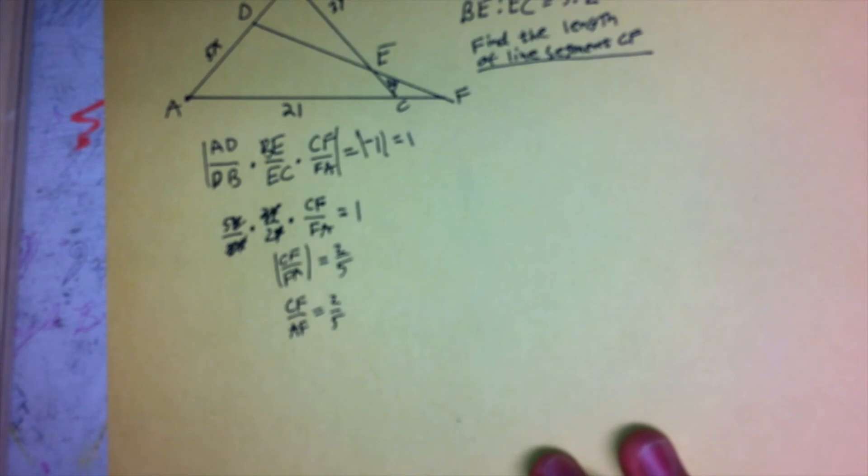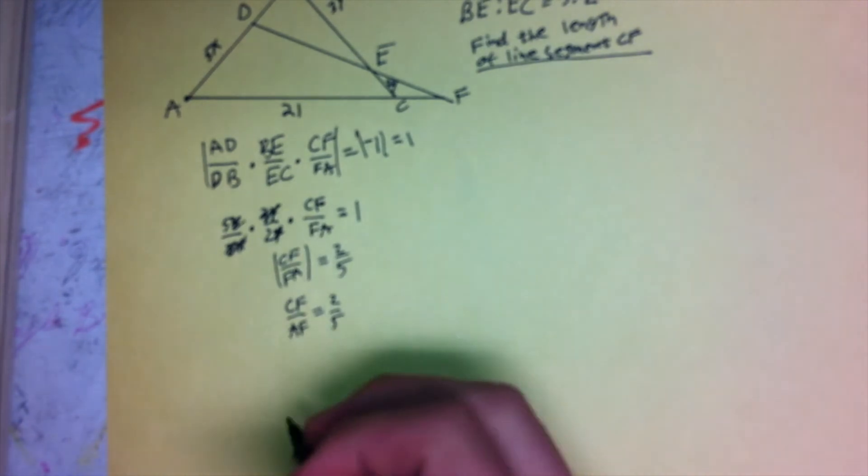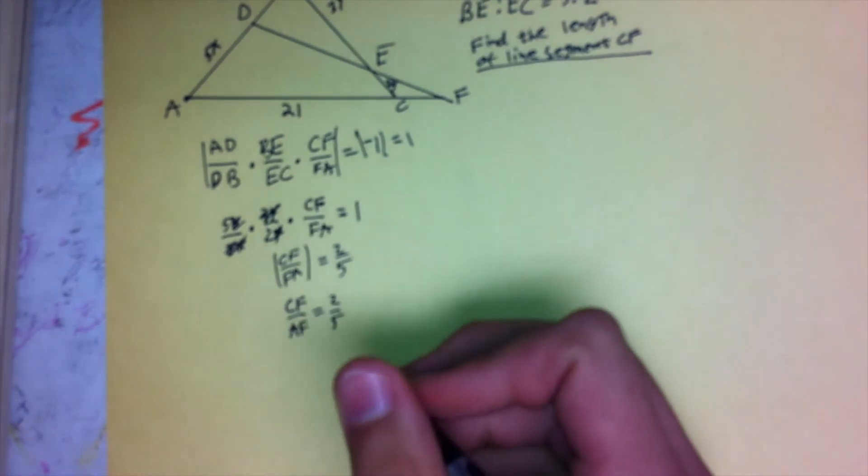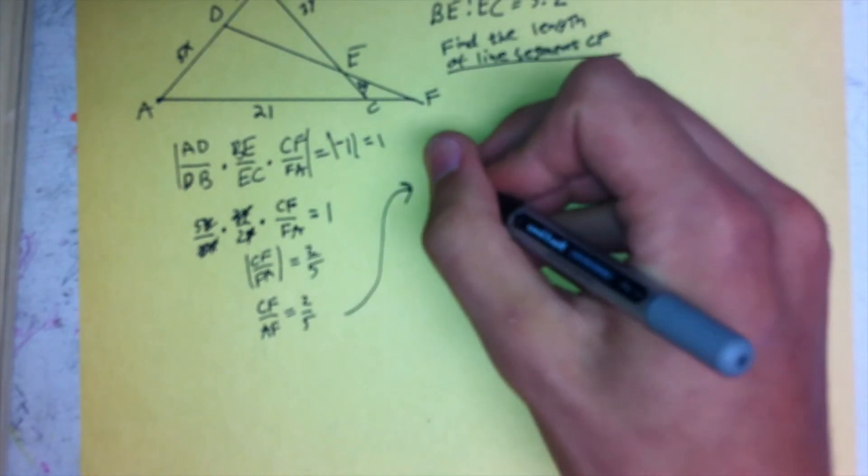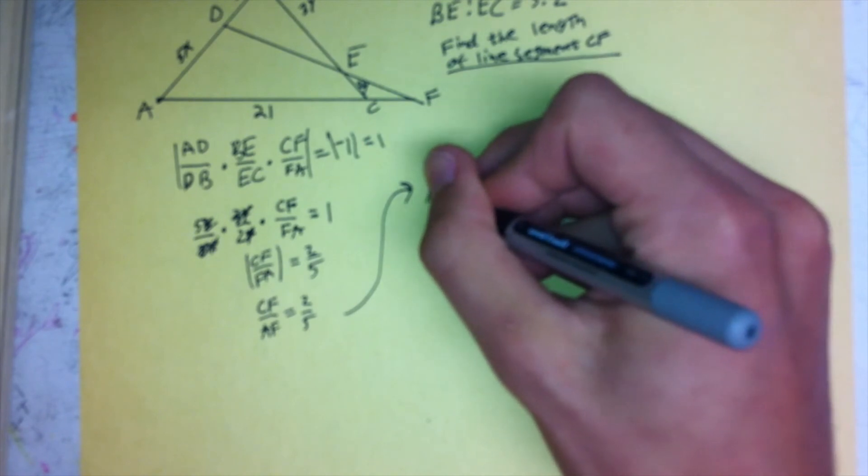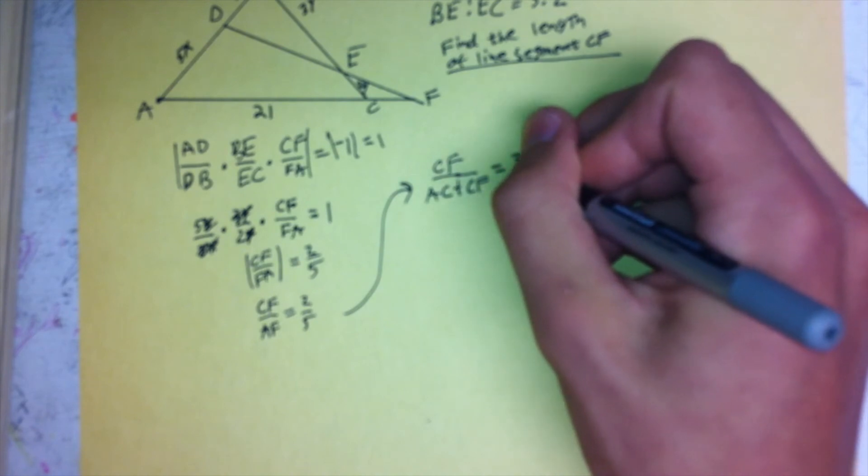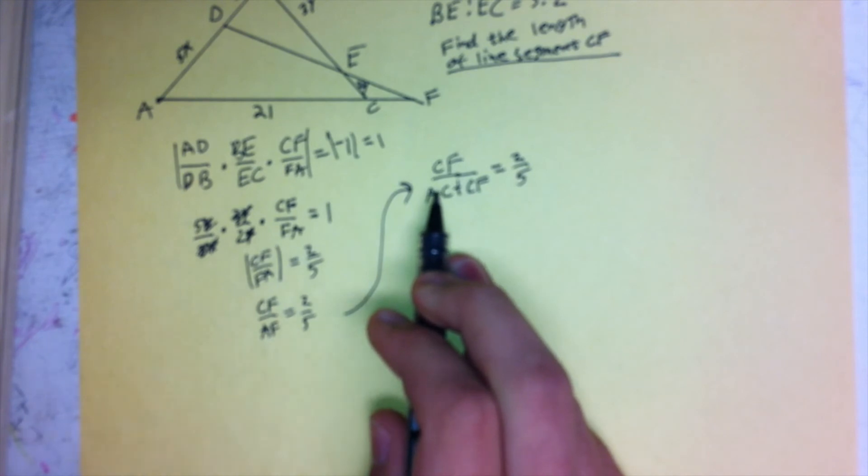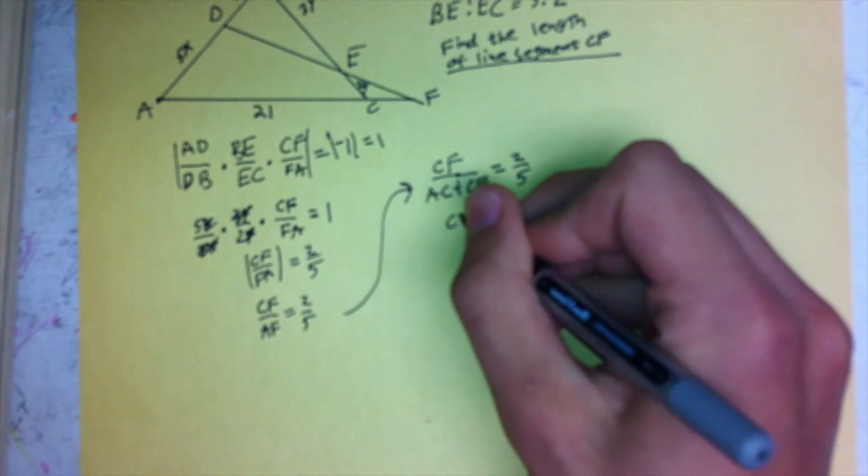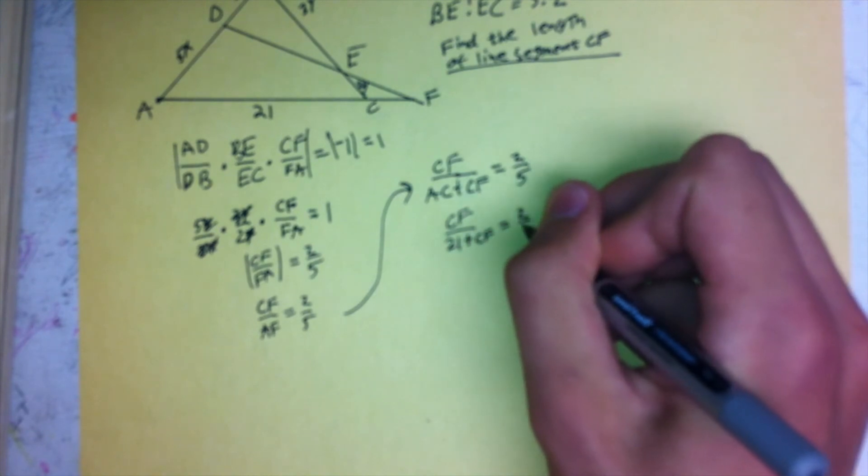And then, we know that CA is equal to 21. So, what we're going to have to do is, we're going to break AF up into CA plus CF. So, that gives us CF over AC plus CF equals 2 fifths. And then, we're going to substitute 21 in here for AC. And so, CF divided by 21 plus CF equals 2 fifths.